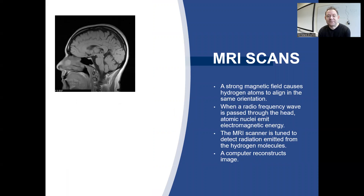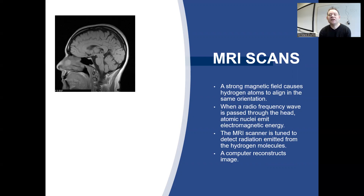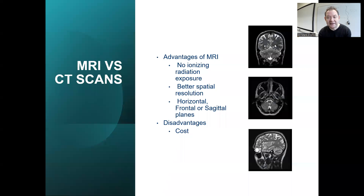With MRI scans, a strong magnetic field causes hydrogen atoms to align in the same orientation. When a radio frequency wave is passed through the head, atomic nuclei emit electromagnetic energy. The MRI scanner is tuned to detect radiation emitted from the hydrogen molecules, and the computer then reconstructs this image.